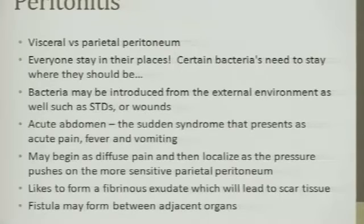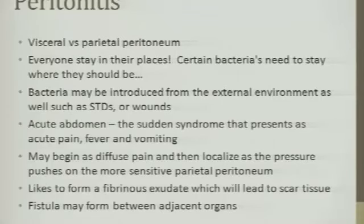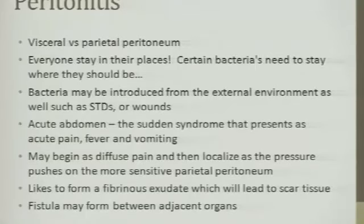Acute abdomen — that's pretty self-explanatory. Sudden syndrome: acute pain, fever, vomiting from acute inflammation. Diffuse pain which becomes more specific — that's a triggering of that parietal peritoneum. In the abdomen, inflammation likes to turn into a fibrinous process, which deposits fibers and causes fibrous scar tissue. In the brain, by contrast, it tends toward liquefactive necrosis because there's no connective tissue — it's just neurons.